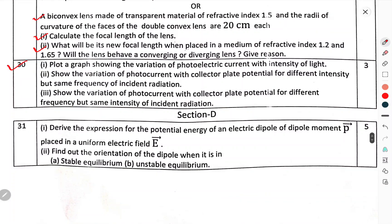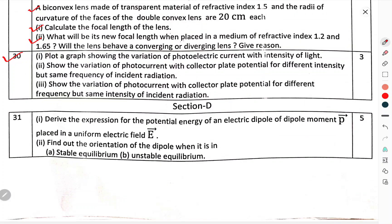Question number 30: Plot a graph showing the variation of photoelectric current with intensity of light. Show the variation of photocurrent with collector plate potential for different intensities but the same frequency of incident radiation.